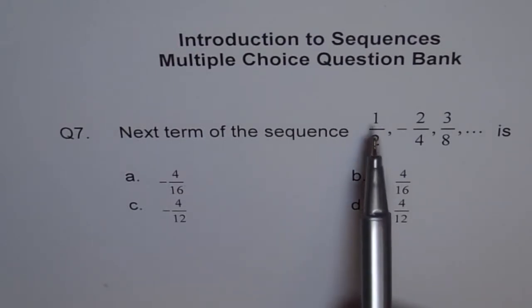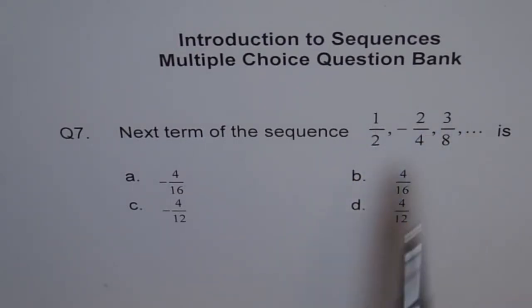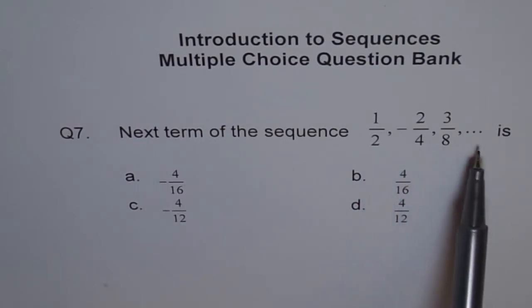And then, the number goes by 1, 2, 3, 4 on the numerator, 2, 4, 8, 16 in the denominator. So, minus 4 over 16 is the right answer.